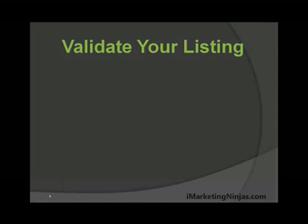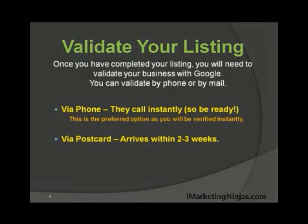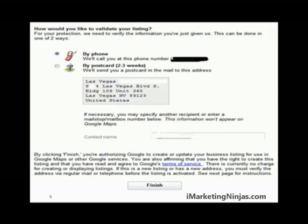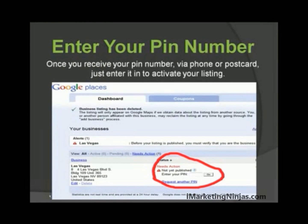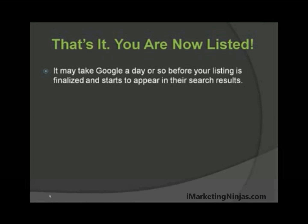Be sure to validate your listing — this is very important. Once you've completed your listing, you'll need to validate your business with Google. You can validate by phone or by mail. If you do it by phone, they call instantly, so be ready — this is the preferred option as you'll be verified instantly. Via postcard, it will arrive somewhere between two to three weeks, but be sure to reply immediately. Once you receive your PIN number via phone or postcard, just enter it to activate your listing. That's it — you are now listed! It may take Google a day or so before your listing is finalized and starts to appear in search results.